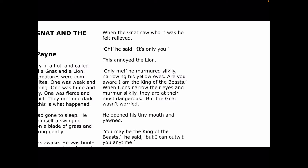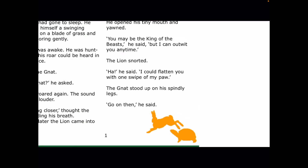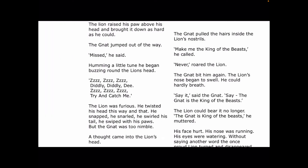He opened his tiny mouth and yawned. You may be the king of the beasts, he said, but I can outwit you any time. The lion snorted. Ha, he said. I could flatten you with one swipe of my paw. The gnat stood up on his spindly legs. Go on then, he said. The lion raised his paw above his head and brought it down as hard as he could. The gnat jumped out of the way. Missed, he said. Humming a little tune, he began buzzing around the lion's head.